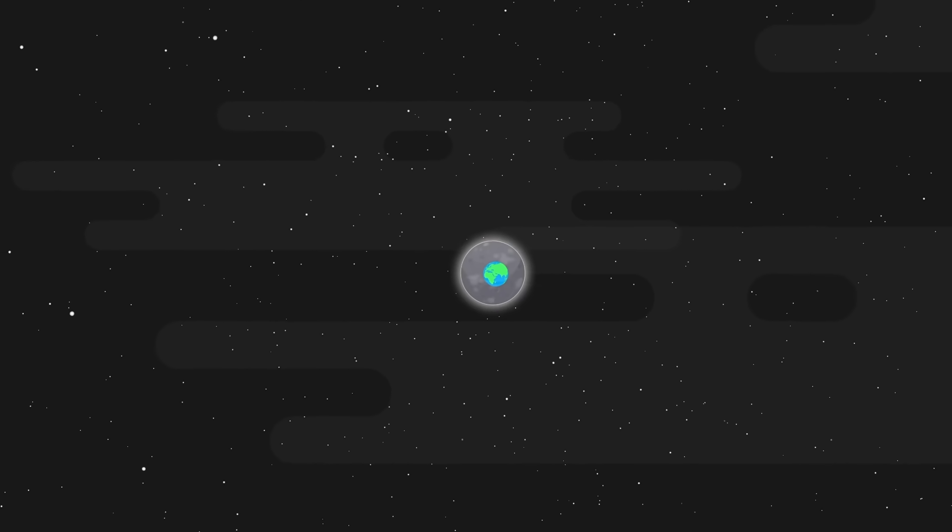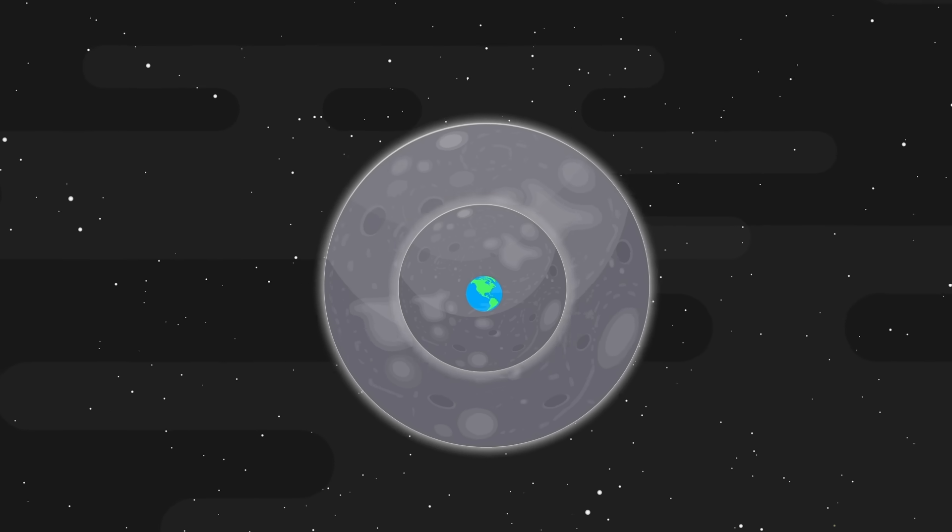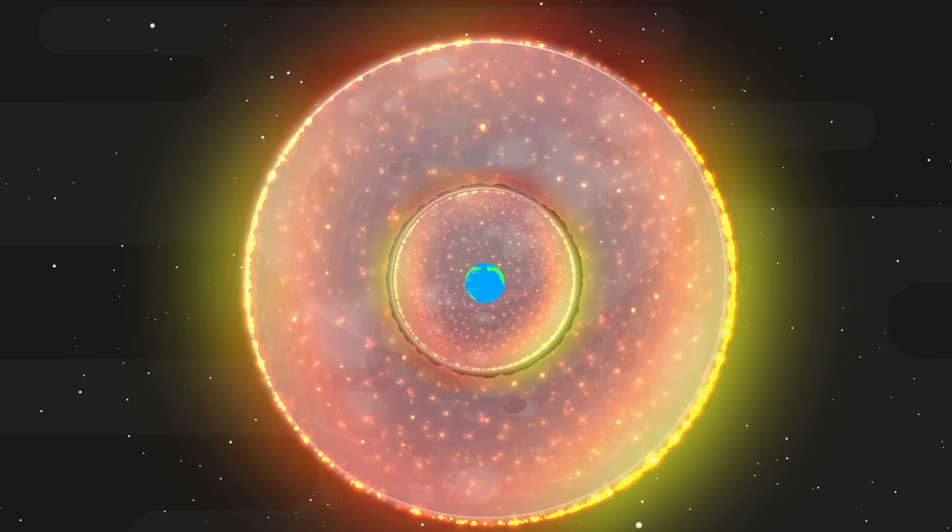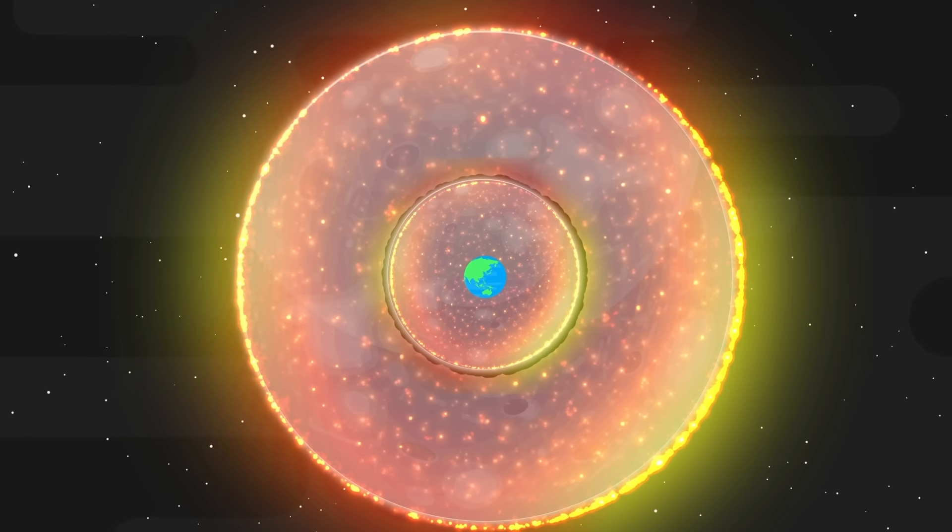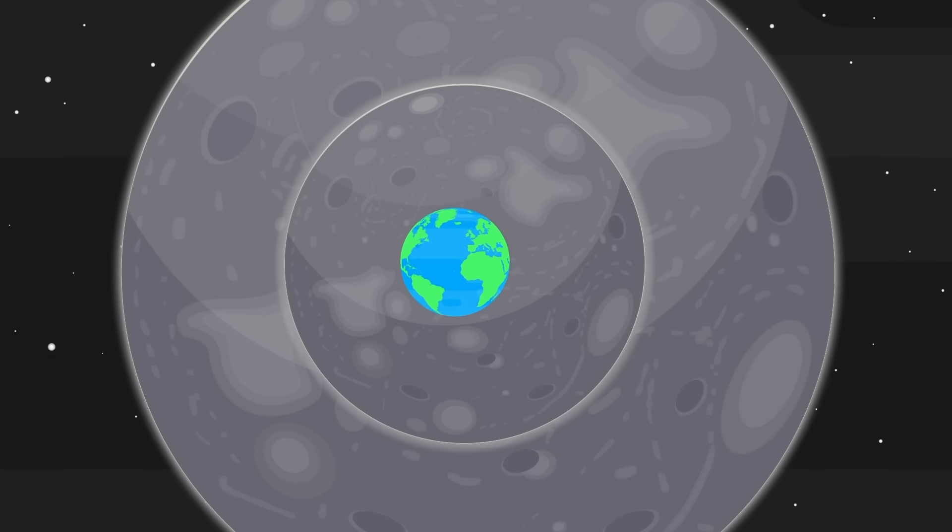Any hunt for Planet X, no matter how big it is, and scientists estimate it's likely at least 5 to 10 Earth masses, is going to be extremely difficult. At such great distances, objects give off very little shine from the sun striking their surface, and their infrared signature is incredibly faint.